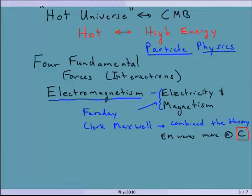A man named James Clerk Maxwell — there's a set of equations called the Maxwell equations which describe all of electromagnetism — combined the theory into one and showed that electromagnetic waves happen to move at our favorite velocity, C. It wasn't until then that it was realized that light is electromagnetic waves. This is referred to as one of the first unifications.